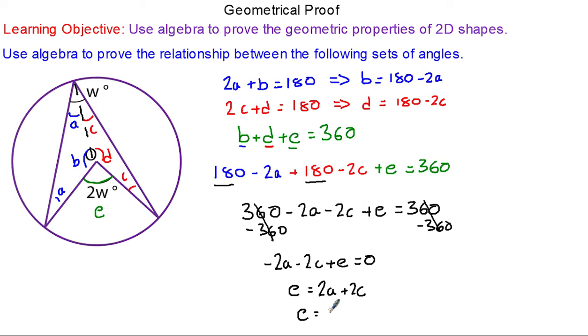We can factorize that. E will equal two lots of a plus c. Here we've denoted e as 2w. So 2w equals a and c which are the angles at the circumference. So two lots of w.